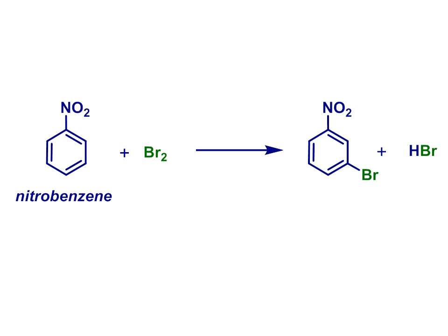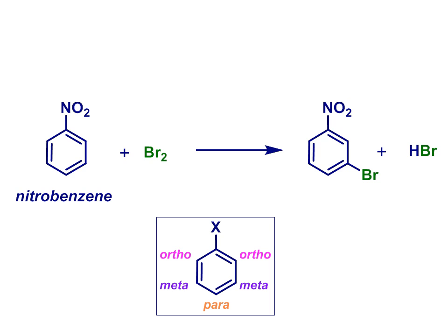These groups also have the opposite directing effects to electron donating groups in that the meta-substituted product is formed in preference to ortho or para isomers.